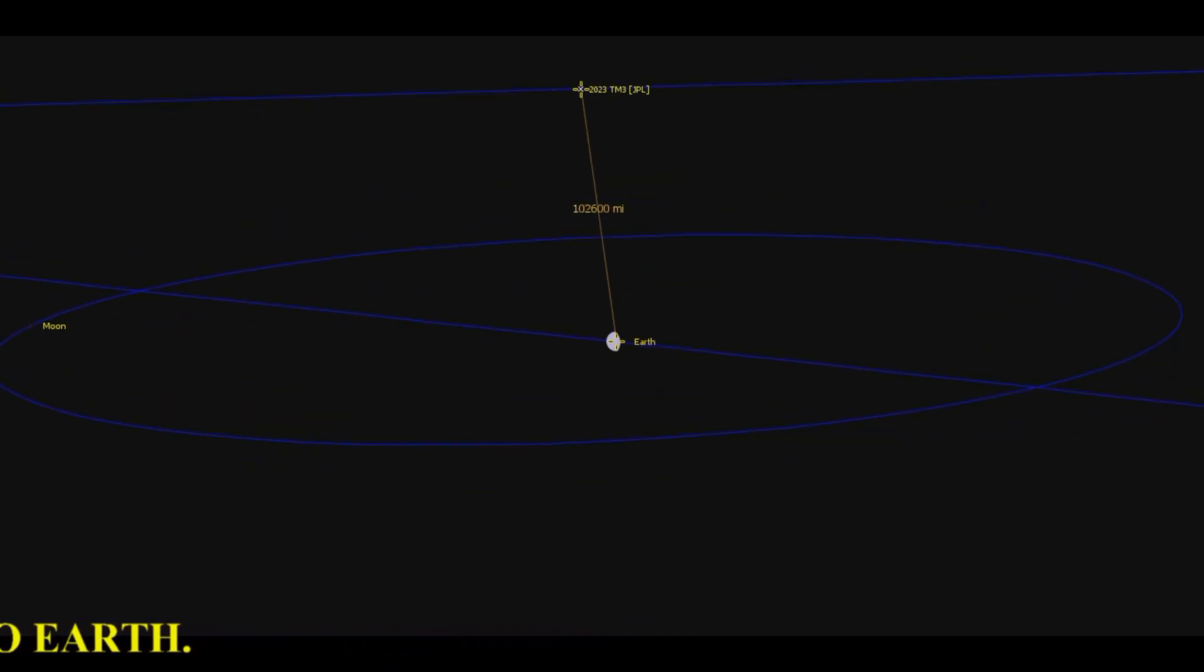It will pass by a distance of 102,631.427 miles from Earth Center to Asteroid Center, or 98,672.627 miles from the surface of the Earth.